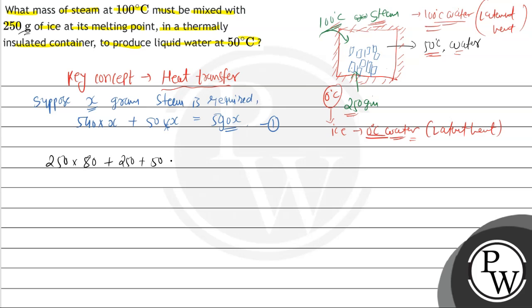So total addition will be 250 into 80, so there will be 20,000, plus 250 into 50, so 12,500. So total will be 32,500. Now this is equation number two.